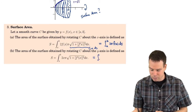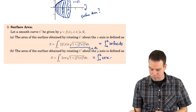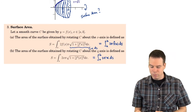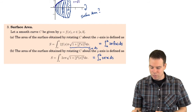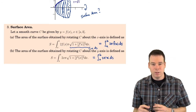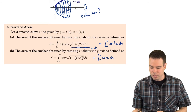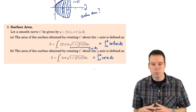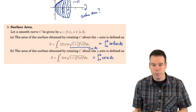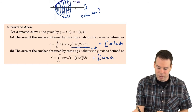For revolving around the y-axis, it's the integral from a to b of 2π times x times ds. So looking at it this way, revolving around the x-axis versus the y-axis involves only a slight change: either f(x) or x appears in the integrand. It turns out there's an even simpler and more general way to remember these formulas, which we'll now derive and write down.